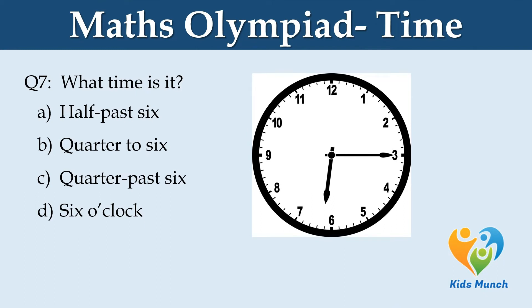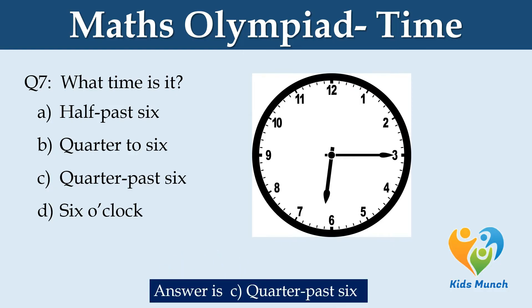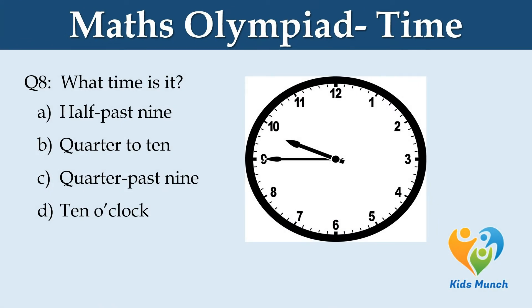What time is it? Option A: half past six. Option B: quarter to six. Option C: quarter past six. Option D: six o'clock. What time is it? Option A: half past nine. Option B: quarter to ten. Option C: quarter past nine. Option D: ten o'clock.